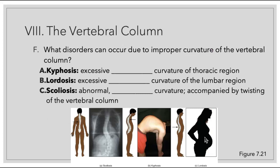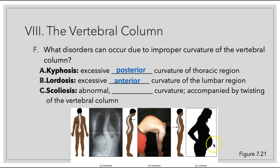What disorders can occur due to improper curvature of the vertebral column? First we'll talk about kyphosis — this is when we have an excessive posterior curvature of the thoracic region, also known as a humpback. Then we have lordosis, where we have excessive anterior curvature of the lumbar region — this tends to happen when we have a lot of weight in our anterior abdomen. Then we have scoliosis, where we have an abnormal lateral curvature accompanied by twisting of the vertebral column, which can be seen on an X-ray.